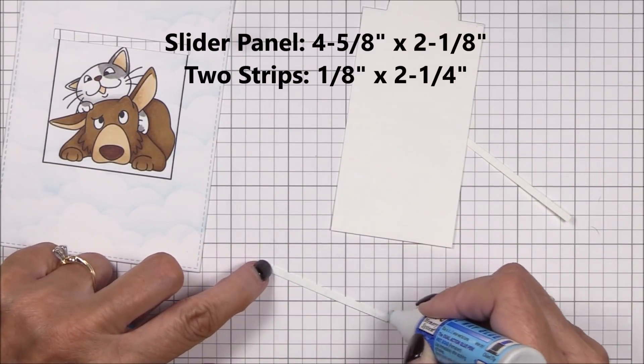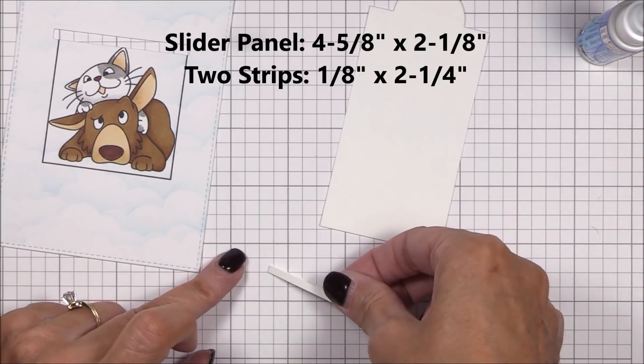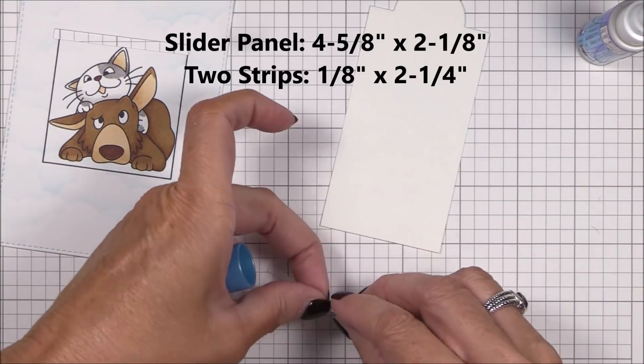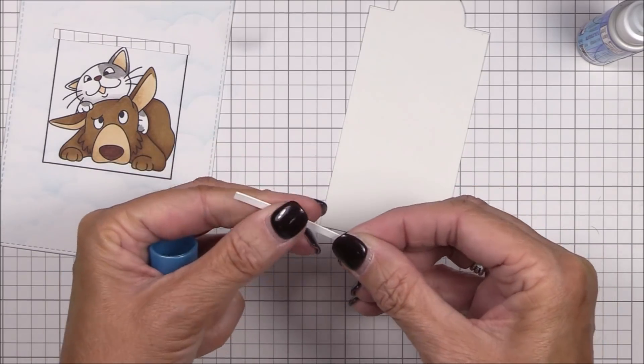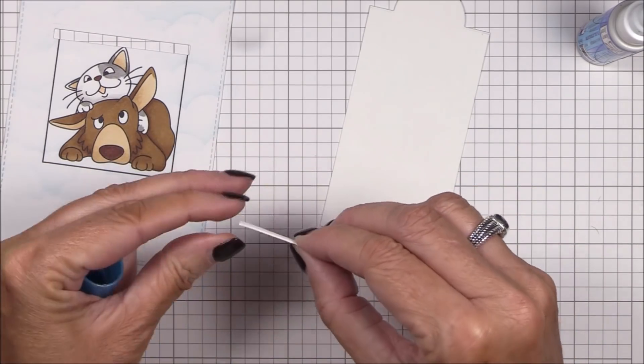I've trimmed a piece of four and five eighths inch by two and an eighth inch smooth white cardstock and I die cut the top using one of the file folder edges to create a tab. This will be our slider panel.